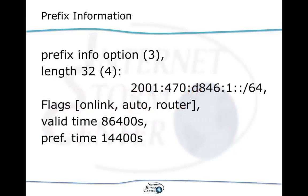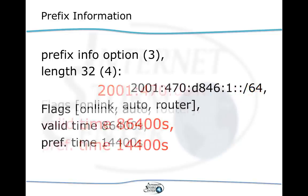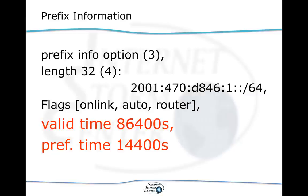The first and most prominent option is the prefix information. In this example, the advertised prefix is 2001:470:d846:1, which represents the first 64 bits — the network part of the IPv6 address. This comes with a validity time, comparable to a DHCP lease time. However, the router has no idea whether anyone is accepting or using an address from this network — it's purely advertising what network address is in use here. It's up to the host to define its own interface ID.